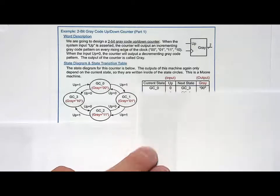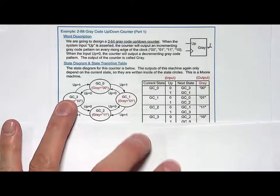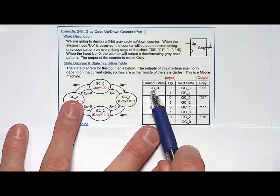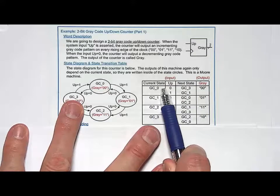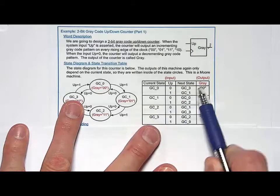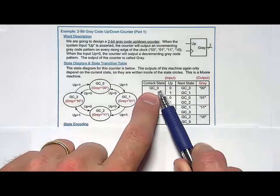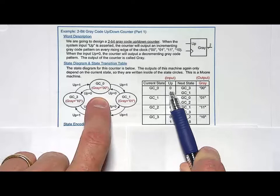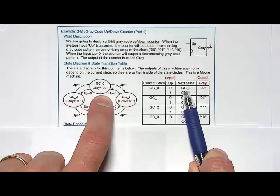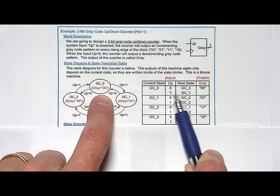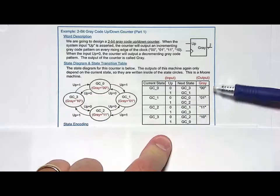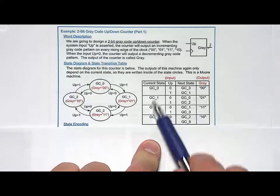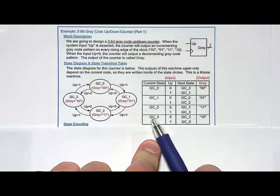If I put that into a state transition table, pretty straightforward, a little bit more complicated because we have an input which is called up. So that means for every current state, we need to list out what to do when up is a zero and when up is a one. So when I'm in GC zero and I get up as a zero, I'm going to count backwards to GC three. When I get a one, I'm going to go to GC one. Notice that my output gray corresponds to the current states. It doesn't matter what the input up is.